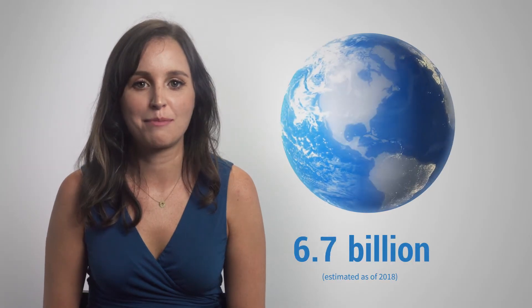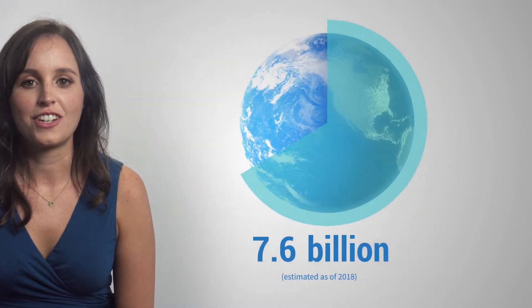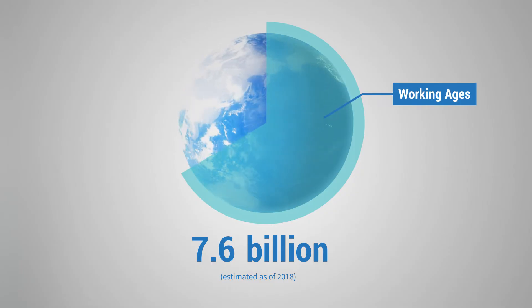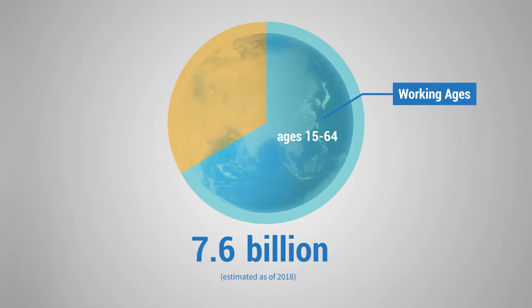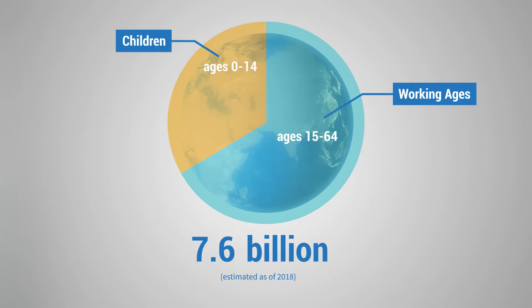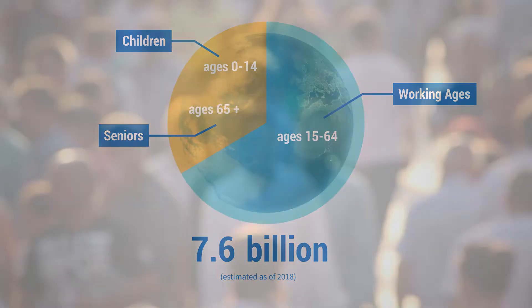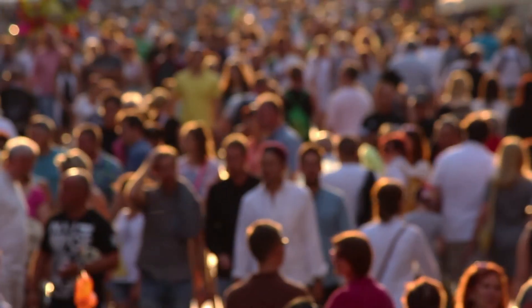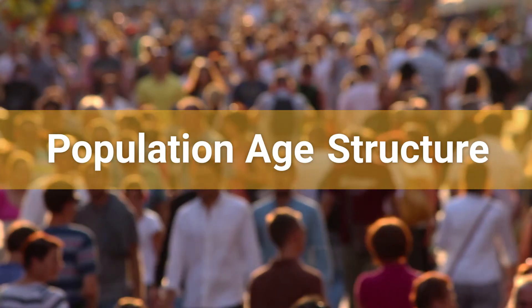There are 7.6 billion people in the world today. Two-thirds are in the working ages, usually defined as those between ages 15 and 64. Children ages 0 to 14 and those ages 65 and older make up one-third. But the share of the population in each age group, referred to as the population age structure, is changing.